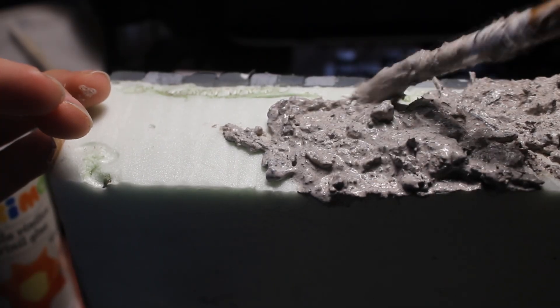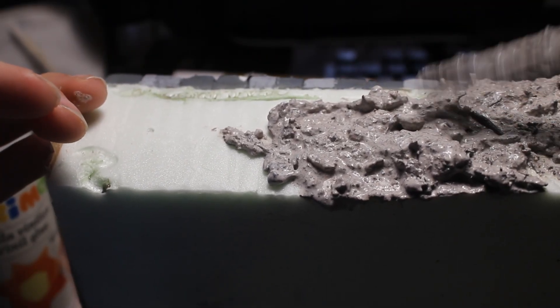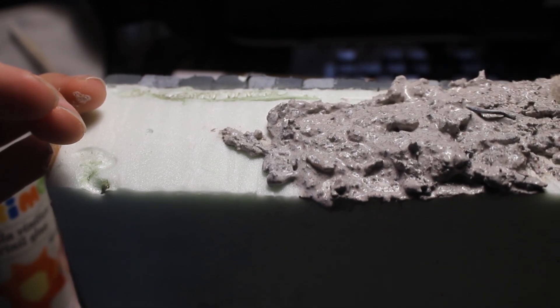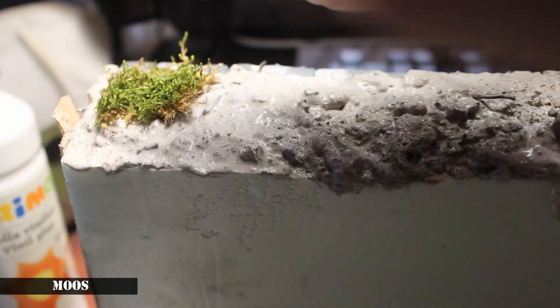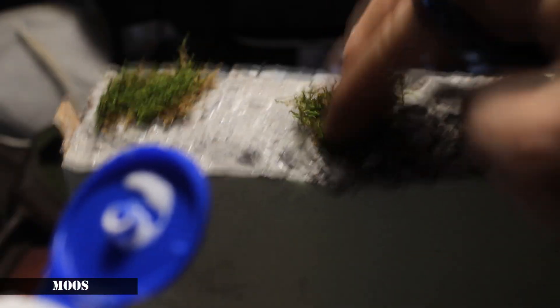For this mixture, I use gypsum, a lot of dirt, glue, sand, and a few rocks. I put it on the sides and I use some green moss that I have at home.